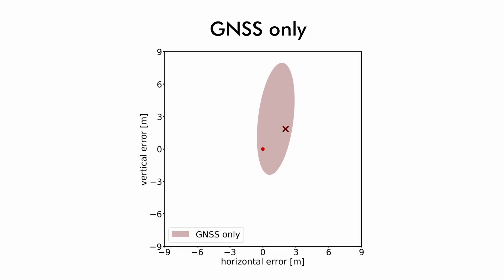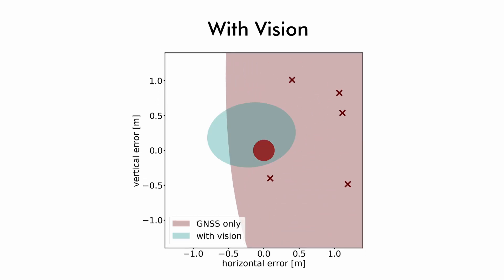Our results show that the accuracy of the proposed system using GNSS and vision reduces the average error of GNSS flights by over an order of magnitude.